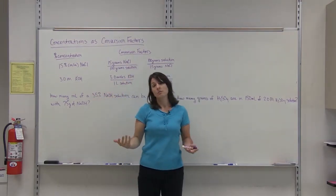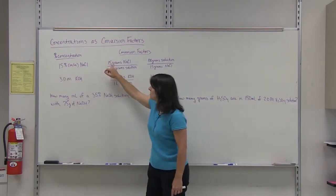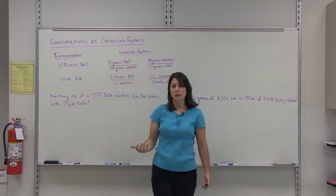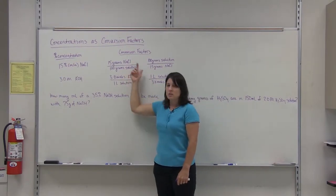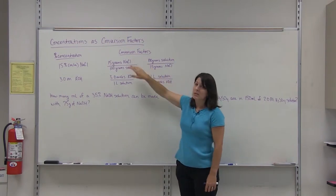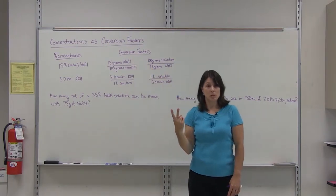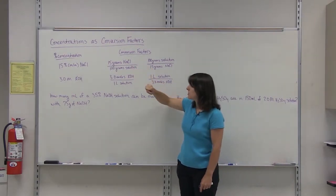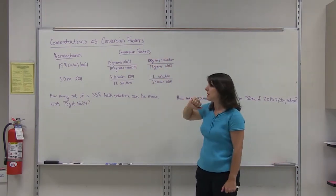If it was mass-volume, it would still be the same numbers — 15%, so 15 over 100 — but it would be grams of solute over 100 milliliters of solution. For conversion factors, it's just writing your relationship as a fraction. We can always turn a fraction into two different fractions: we can have the grams of solute on top and the grams of solution on the bottom, or we can flip it over and write the fraction upside down.